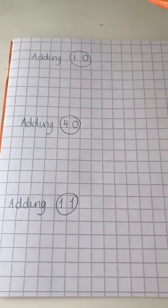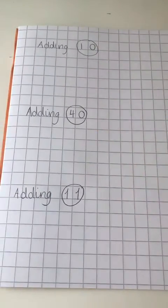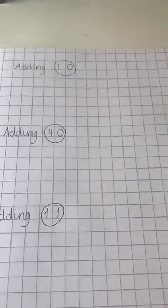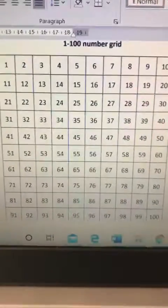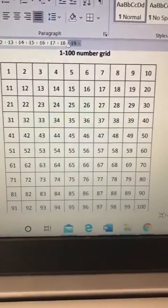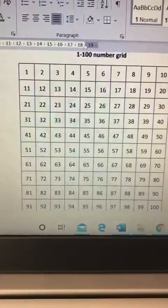Today we're going to be looking at adding 10, 40, and 11 using our 100 square to help us. So let's start with the number 17.